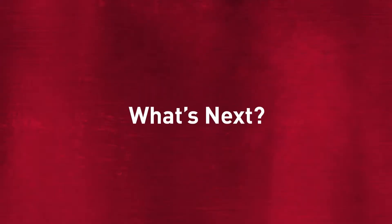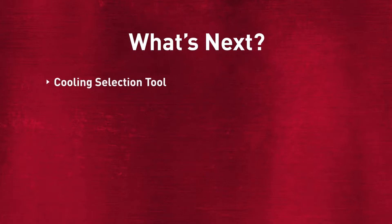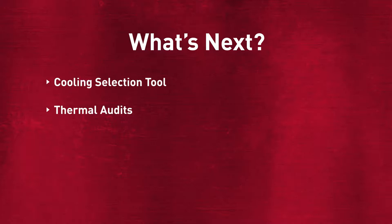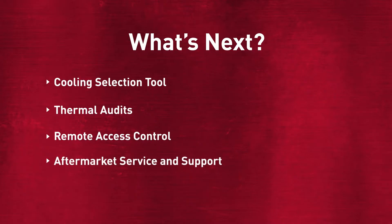If you're designing a system, remember to use our cooling calculator — it will guide you in the right direction. If you have equipment already on your shop floor that needs cooling added, call one of our thermal specialists and they can come and do a thermal audit for you. We also have remote access control for continuous monitoring, and our aftermarket service and support can assist you from purchase to maintenance. For more information on cooling, contact your local Hoffman representative or look us up on the web.